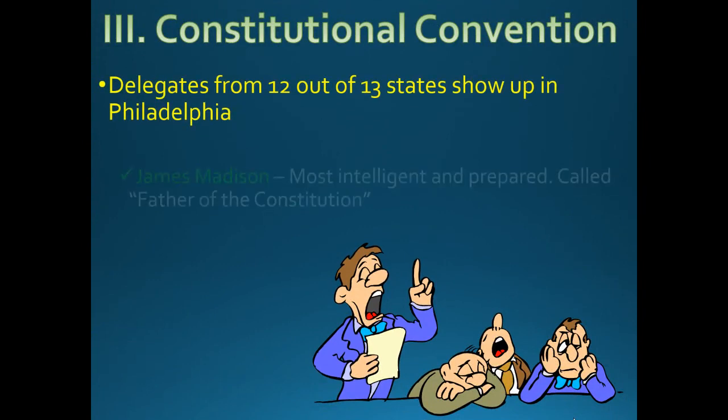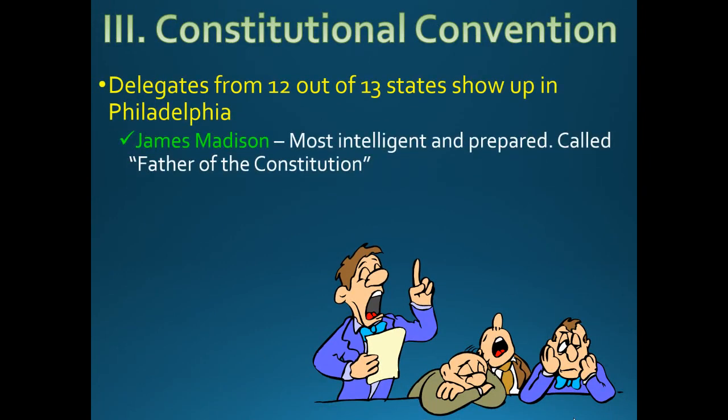Delegates came to this Constitutional Convention to scrap the Articles and write the Constitution. James Madison was the Father of the Constitution — he was the smartest guy in the room, the most conscientious one.